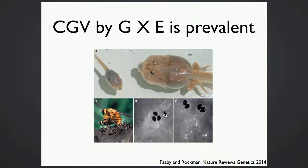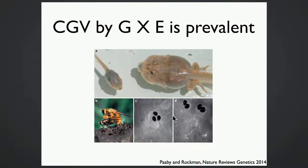There have been many studies looking at cryptic genetic variants revealed by external perturbations. I borrowed this figure from a recent review paper to illustrate two examples. In the top panel, we have two sibling tadpoles fed different diets to create two very different body morphologies. In the bottom three panels, the example is the dung fly: when raised at different temperatures, females can develop varying numbers of sperm storage organs, or spermathecae.